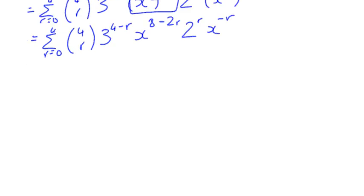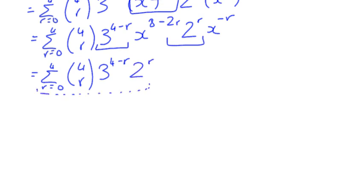Then, one last rearrangement, I'm going to put all my coefficients together, all my numbers together at the front. That's 4 choose R, that's a number. I've got 3 to the power 4 minus R, and my 2 to the power R is also a number. So that is my coefficient. And I've got X to the power 8 minus 2R, and I've got X to the power negative R. If I multiply those two terms together, I add the powers, which actually gives me 8 minus 3R.